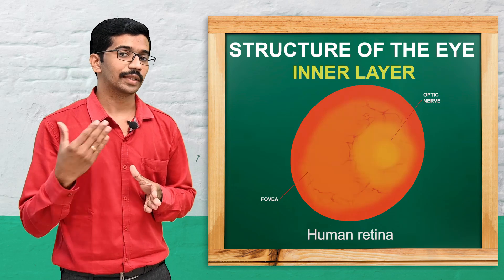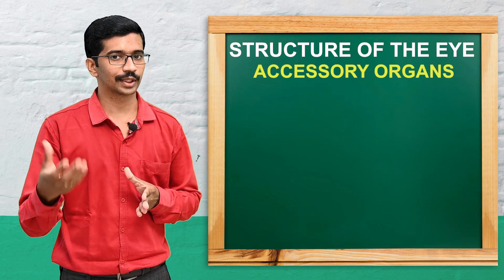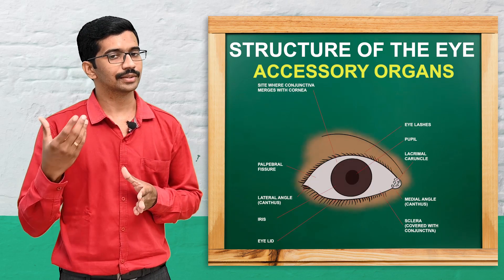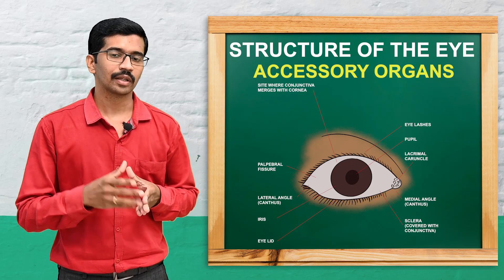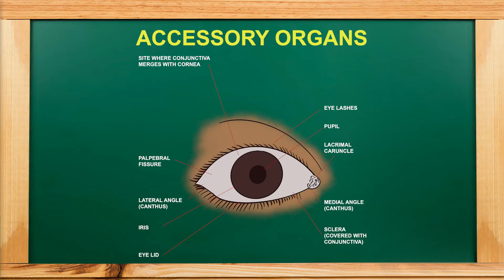Apart from the eyeball itself, there are certain accessory organs related to the eye. The eyebrow is a skin-covered area of the orbital ridge of the frontal lobe. The eyelid is connective tissue — specifically the tarsal plate — covered with skin, which protects the eye from light and foreign substances. The eyelid contains sebaceous glands called meibomian glands, which secrete sebum and help keep the eye moist.